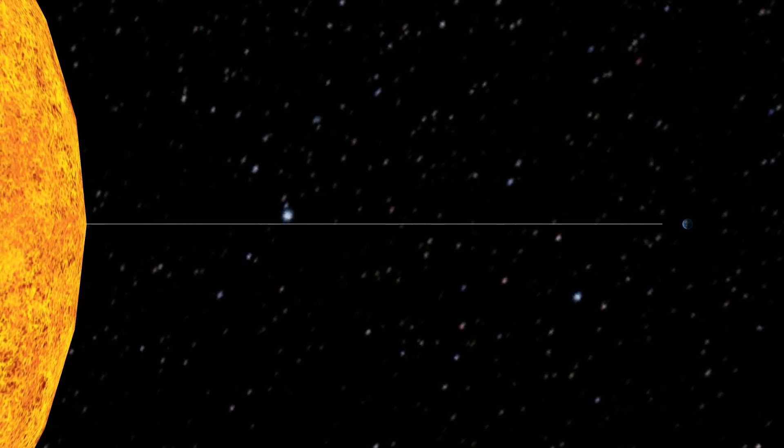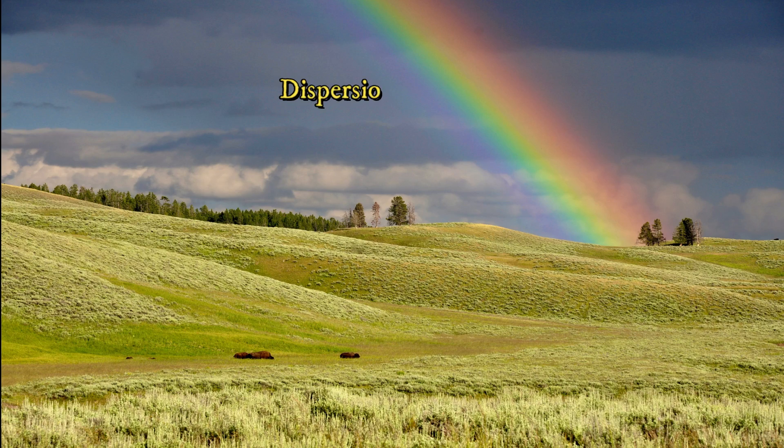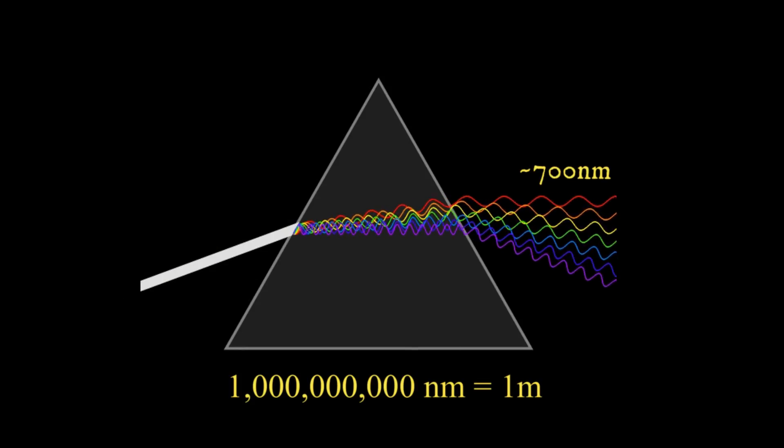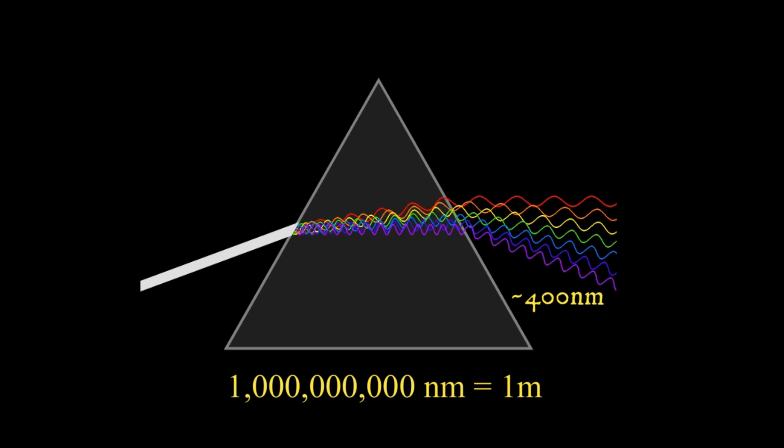If there are water droplets in the Earth's atmosphere under the correct circumstances, this light disperses into separate components of different wavelengths, which we see as different colors. Red light has the longest wavelength, forming a more stretched out wave, while violet light has the shortest wavelength, forming a more compressed wave.